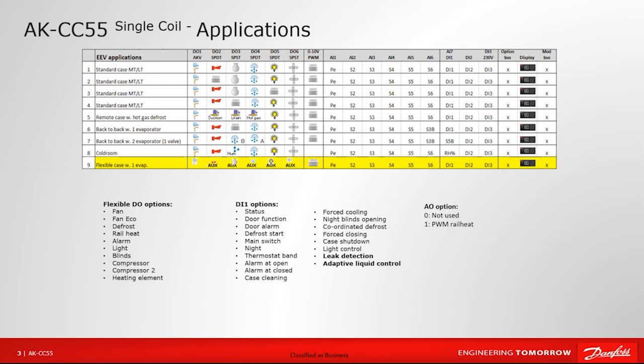Application two is probably the most common selection we see. It gives us expansion valve control, defrost, case lights, evaporator fans, and under DO2, anti-sweat heater control for door heaters where needed. For other evaporators in a supermarket where there are no door heaters, it's simply a matter of not wiring anything up to that relay. We can blindly apply application two for most standard jobs without worrying about picking and choosing — it typically offers everything needed for a standard setup.